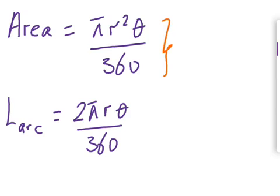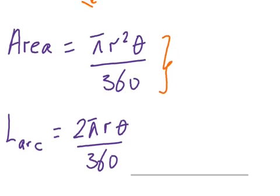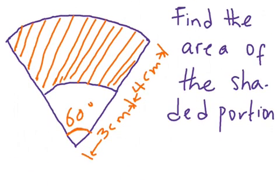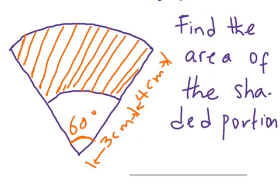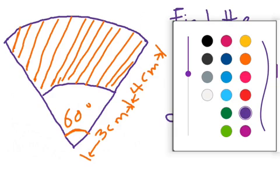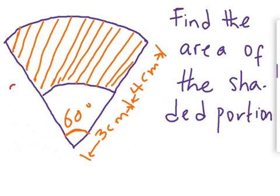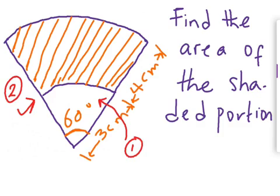Since we are asked to find the area, we go back to our question and analyze it so we know where to start from. We have a big sector — we can call the entire sector 'Sector 2' — and the small sector inside we can call 'Sector 1'. The shaded portion is in between the big sector and Sector 1.